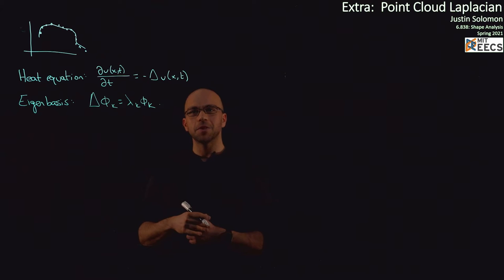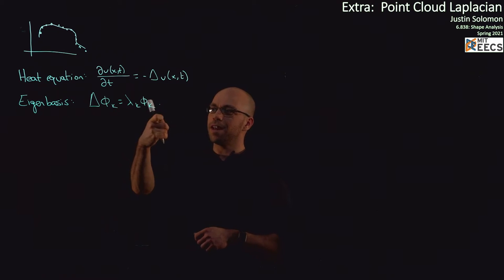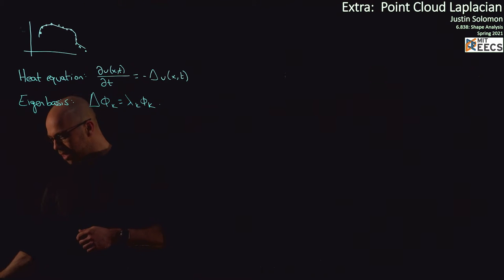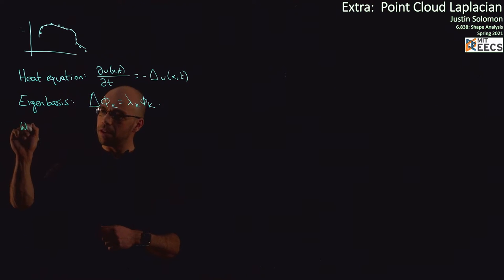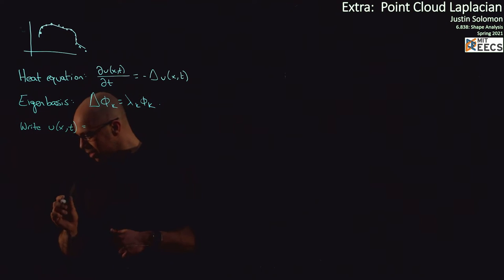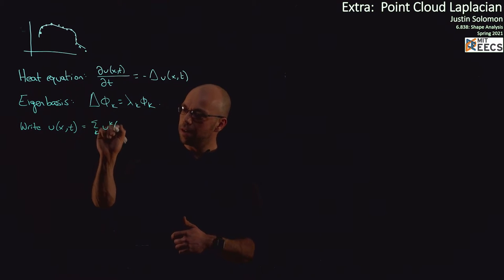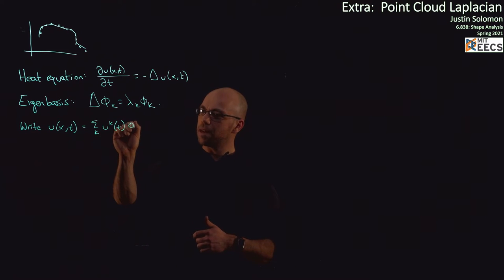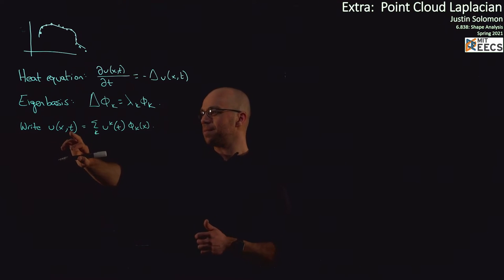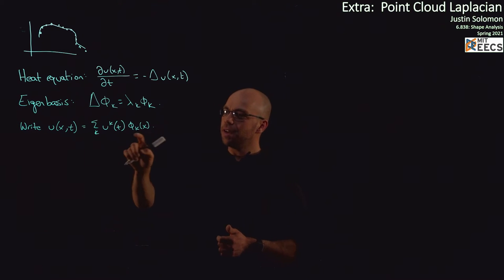One fact we haven't really proven in this class but we're going to use is that you can take any square-integrable function and write it in this eigenbasis. So what does that mean? At any fixed time t, I can write u(x, t) as a sum over k of u_k(t) times φ_k(x). The basic point here is that if I freeze time, this is just a function over my domain, and all I'm doing is writing that function in the φ_k basis. But time is moving forward, so I have to think of those coefficients as changing as a function of time.